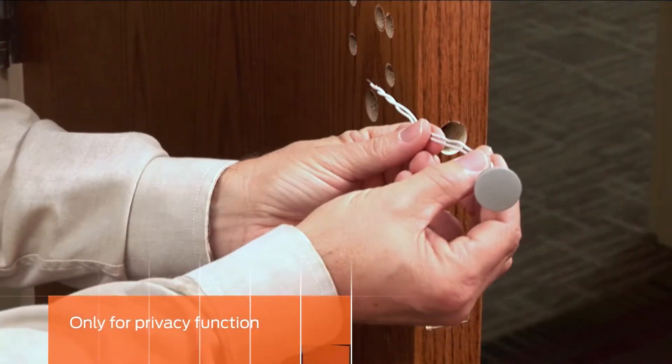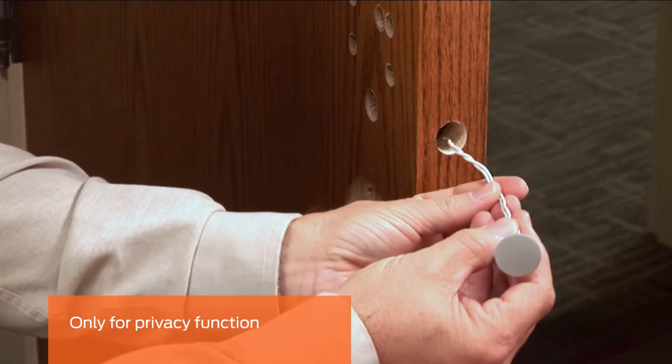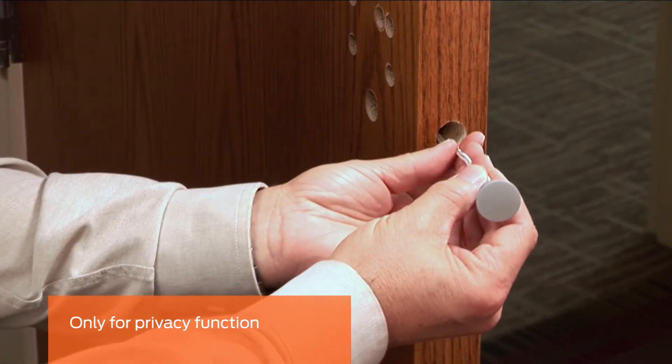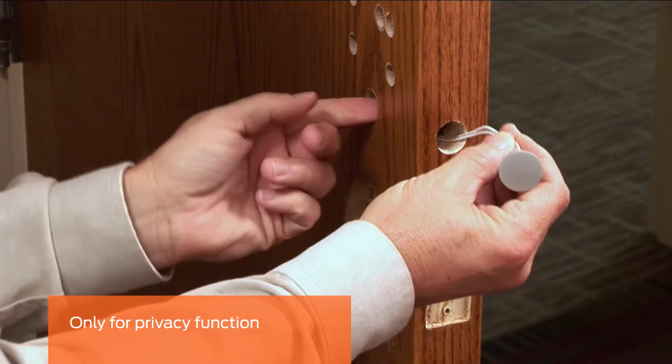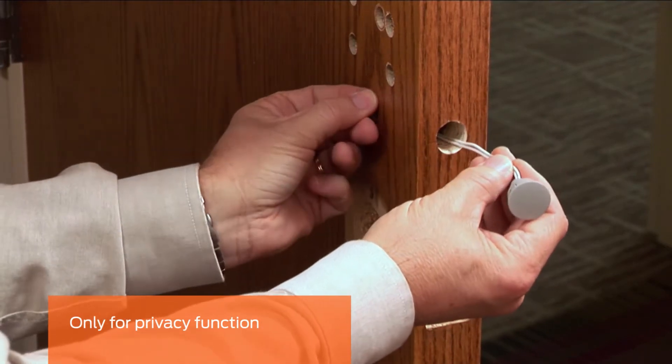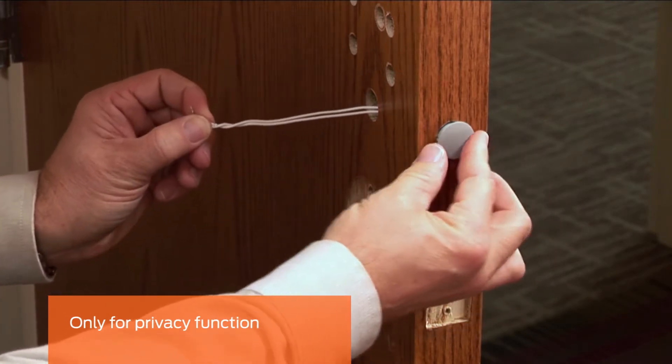This step is only for locks with a privacy function. Install the door position switch. Feed the door position switch wires through the hole in the door edge. Run the wires through the upper hole on the inside of the door. Then push the door position switch sensor into the opening.